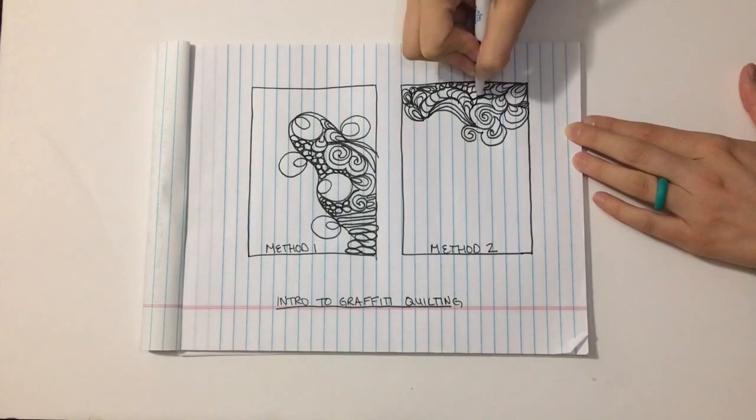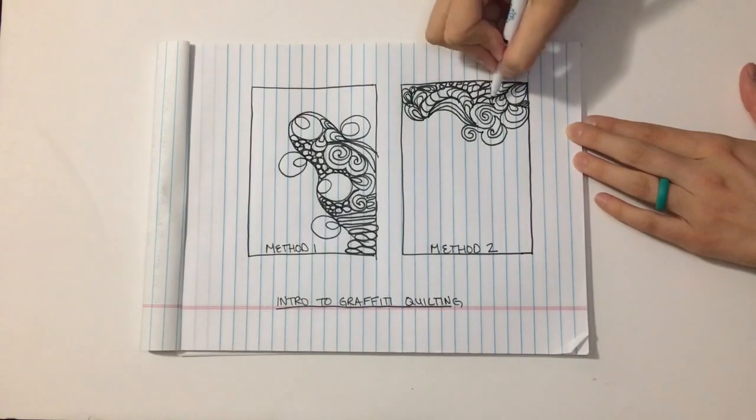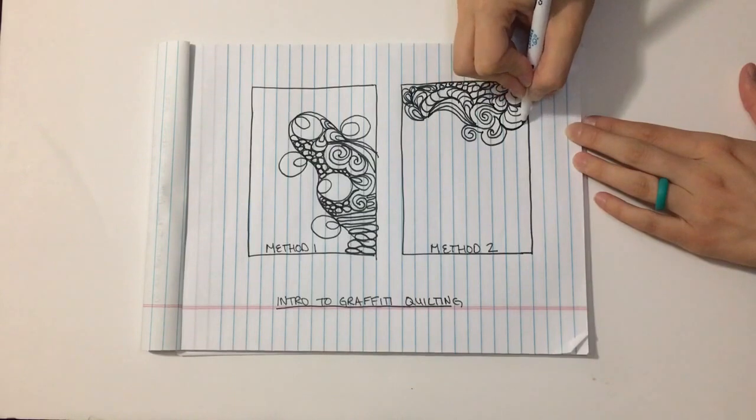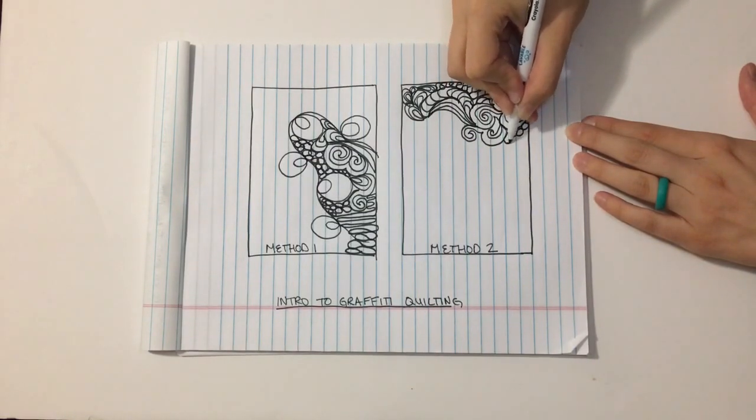You notice there I paused and did a funky little paisley off onto the side to fill in that space. And then I can retrace to come over here and add some pebbles and just continue filling in.